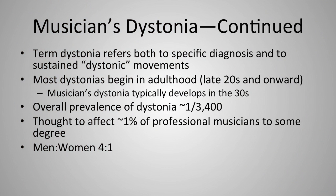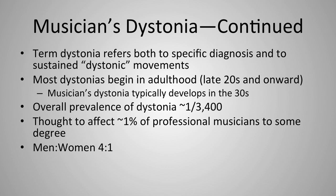Most dystonias tend to start in adulthood — in the 20s and beyond — and musicians' dystonia typically develops in the 30s. The overall prevalence of dystonia of any kind in the general population is about 1 in 3,400. About 1% of professional musicians are thought to be affected to at least some degree, though this may be an underestimate due to significant stigma in the professional musical community. Men are about four times more commonly affected with musicians' dystonia than women, which is unusual compared to the general incidence of dystonia.